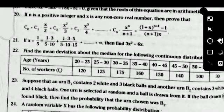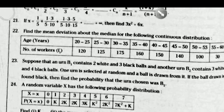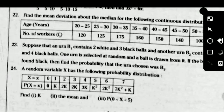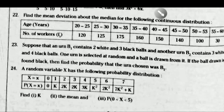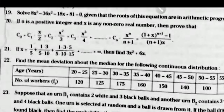Problem 22, from measures of dispersion: find the mean deviation about the mean for the following continuous distribution. Problem 23: suppose urn B₁ contains 2 white and 3 black balls, and urn B₂ contains 3 white and 4 black balls. One urn is selected at random and a ball is drawn from it. If the ball drawn is black, find the probability that the urn chosen was B₁. Problem 24, from random variables: random variable X has the following probability distribution — find the value of k, the mean value, and P(0 < X < 5). This is the question paper — prepare these model questions and you will get very good marks in the public examination.